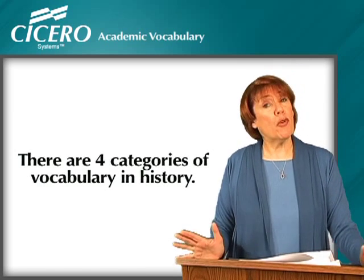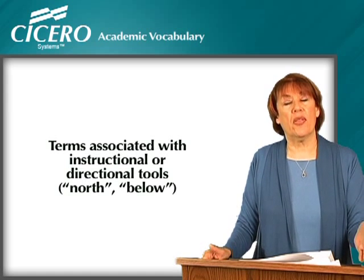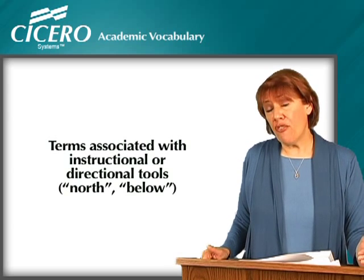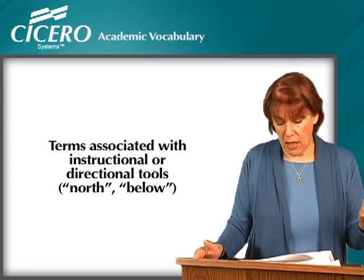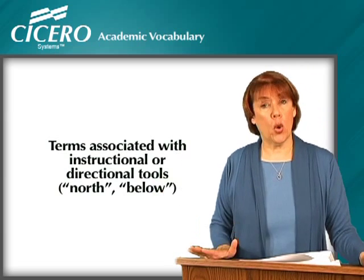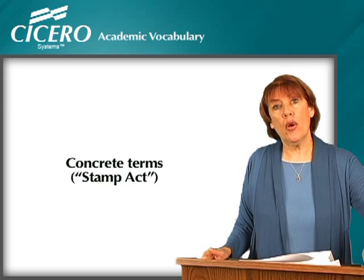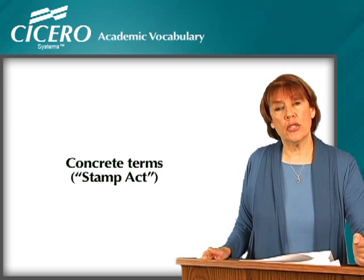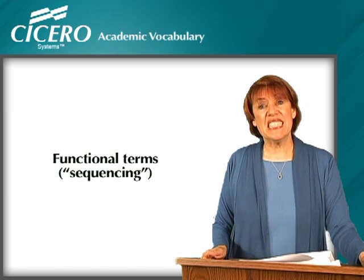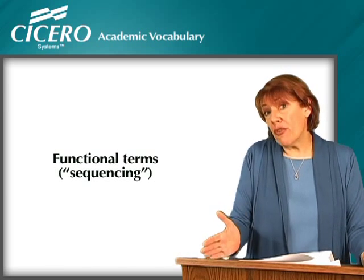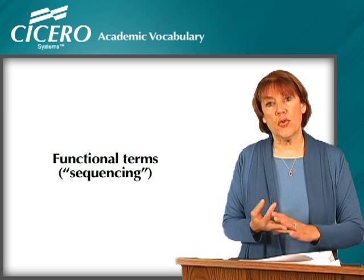There are four categories of vocabulary in history. First, there are words associated with instructional or directional tools — words like north, south, latitude, longitude. These are fairly easy to teach because you can demonstrate them on a map. Second, there are concrete terms, like the Stamp Act, where you can provide a brief synopsis for student understanding. Third, there are functional terms — things like sequencing and chronology — that help students understand cause and effect, how history is organized, and how ideas, events, and individuals in history are connected.